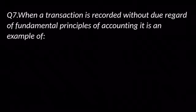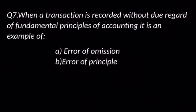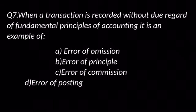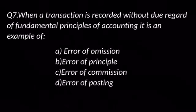Question number seven: When a transaction is recorded without due regard to the fundamental principles of accounting, it is an example of — options are: A. Error of omission, B. Error of principle, C. Error of commission, and D. Error of posting. The answer is B: Error of principle.